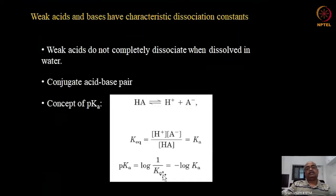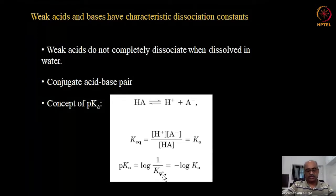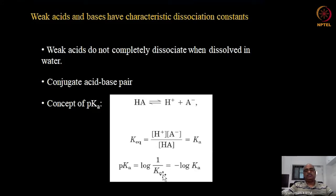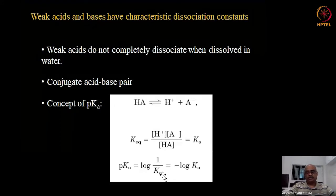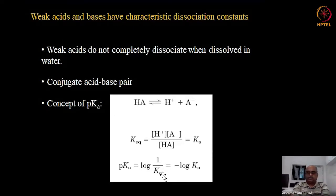Unlike strong acids — remember, a strong acid or strong base is something that completely dissociates, like hydrochloric acid as a strong acid example and sodium hydroxide as a strong base example. In the case of a strong acid, one molar dissociates into one molar protons. In biological systems, the most important kind of acids are the weak acids, which do not dissociate completely — that's the primary difference.